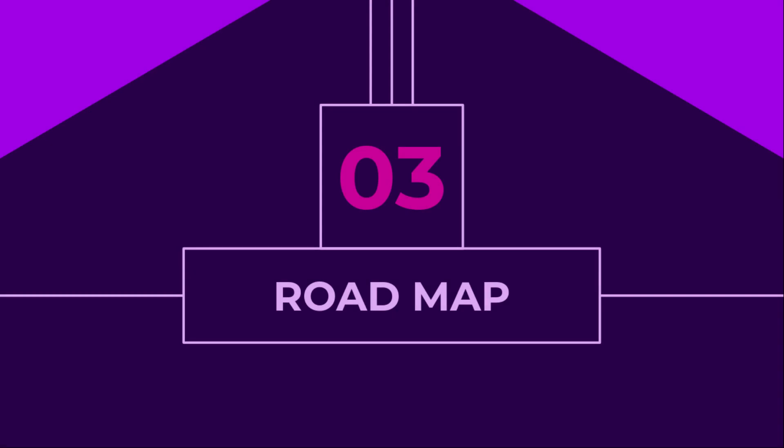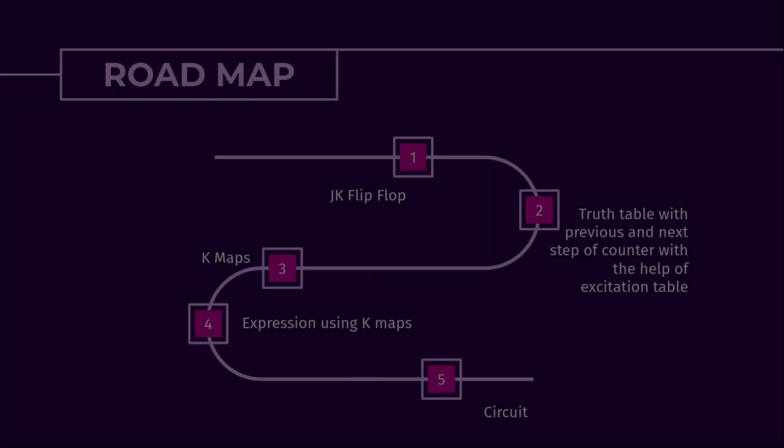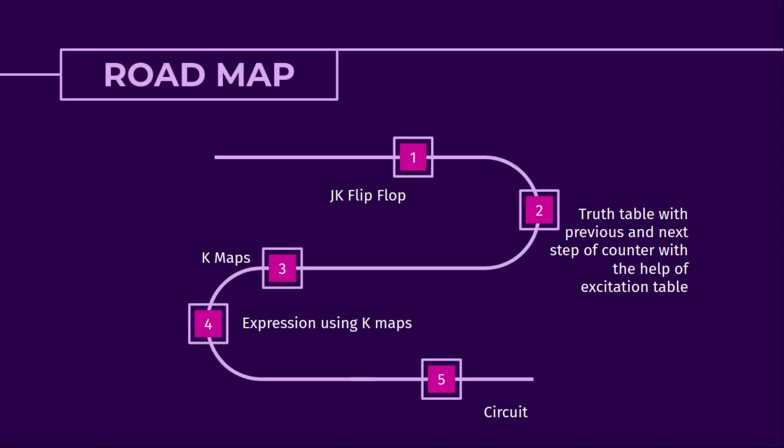In this subsection, we will see the steps we are going to follow to build a 3-bit synchronous gray code counter. The roadmap is as follows: first, a quick glance at what is a JK flip-flop; second, we will make a truth table with present and next state using the excitation table; next, we will create k-maps and evaluate the expressions; and finally, we will design the circuit based on these expressions.